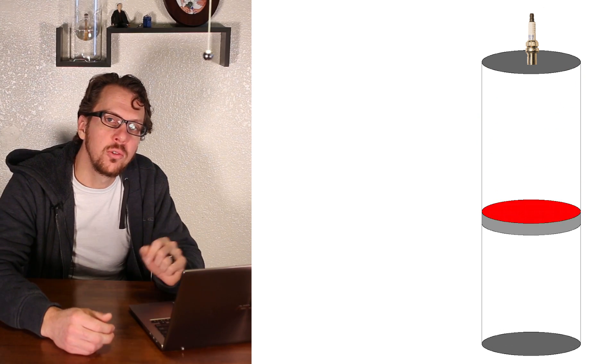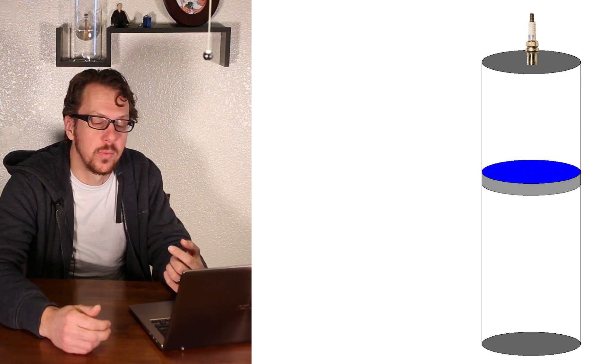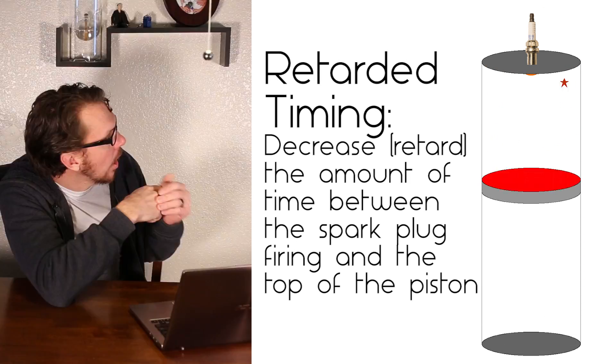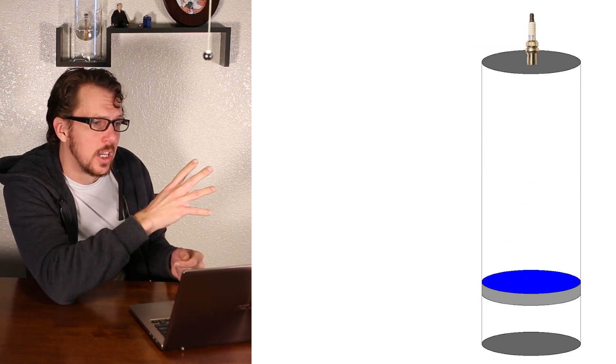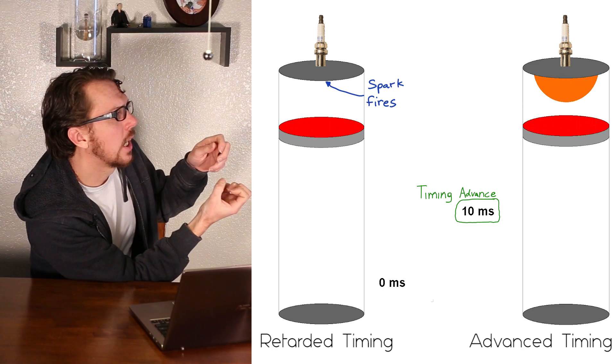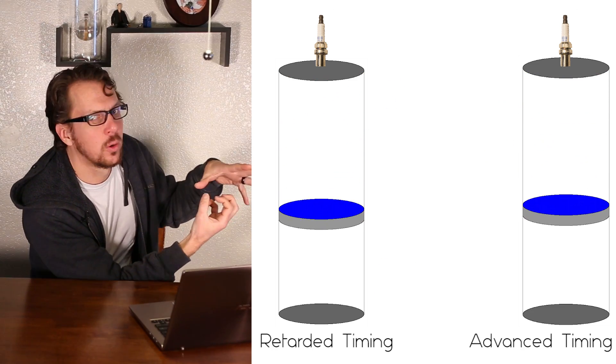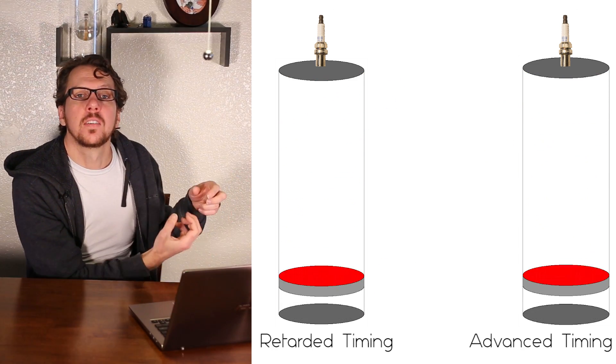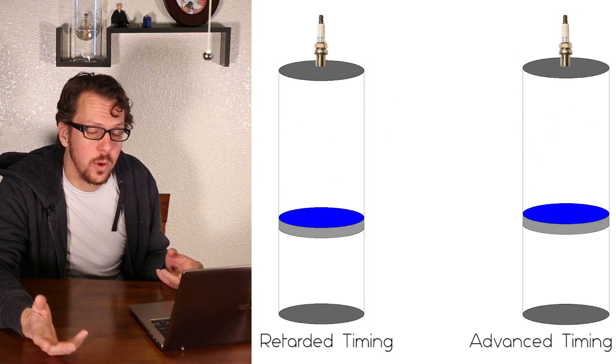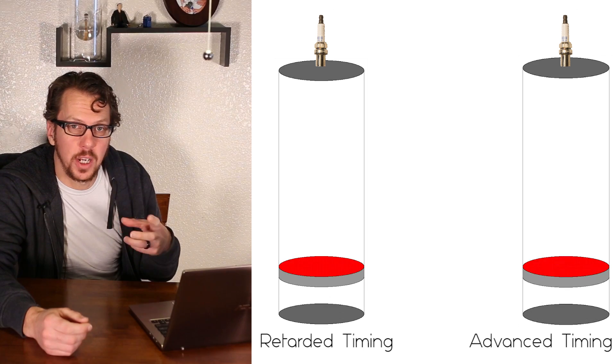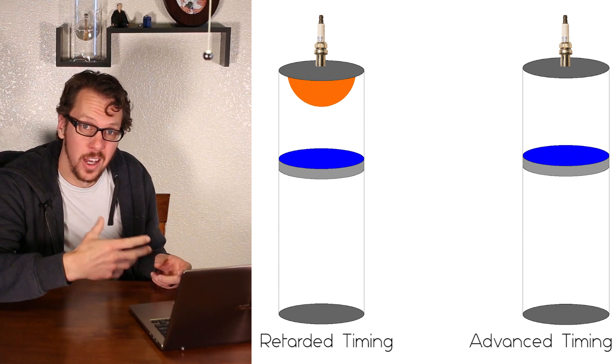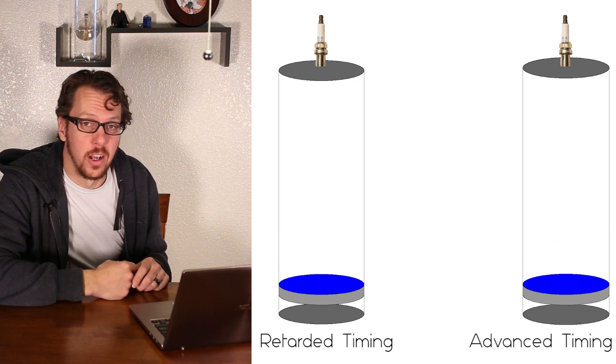So instead what you do is you retard the timing, which basically means that the spark plug fires later. And what happens when the spark plug fires later is the cylinder is already kind of on its way down when the flame wall reaches its peak. So it reduces the peak pressure within the cylinder. Now this does mean less performance, but it ensures that the pressures within the cylinder never get high enough to spontaneously combust the gasoline and cause pre-ignition.